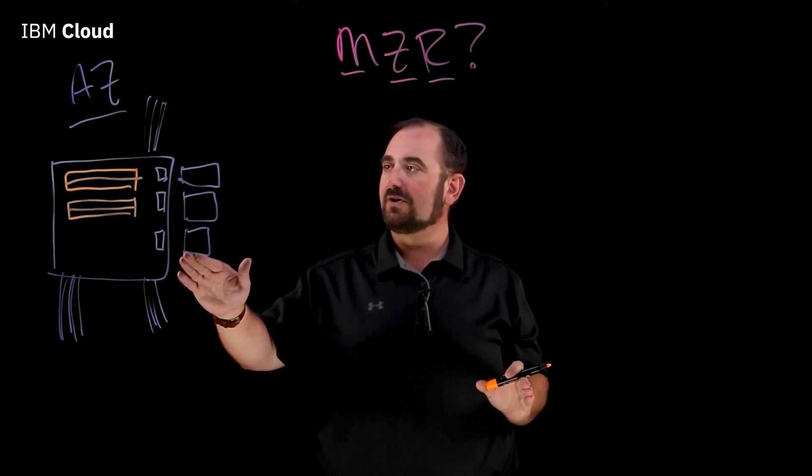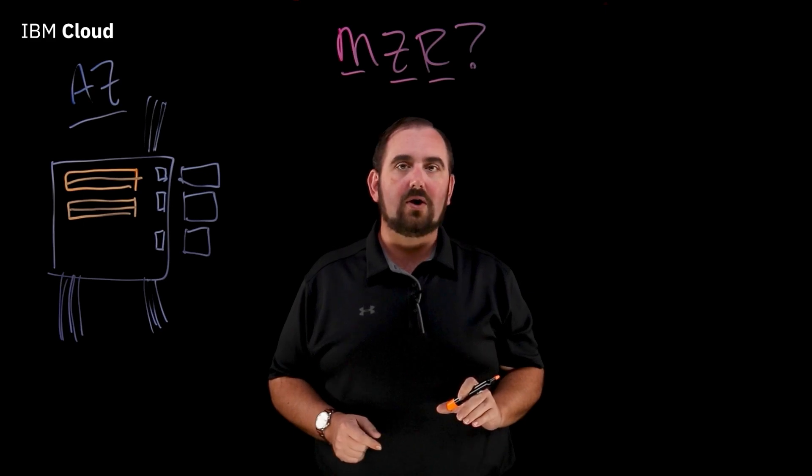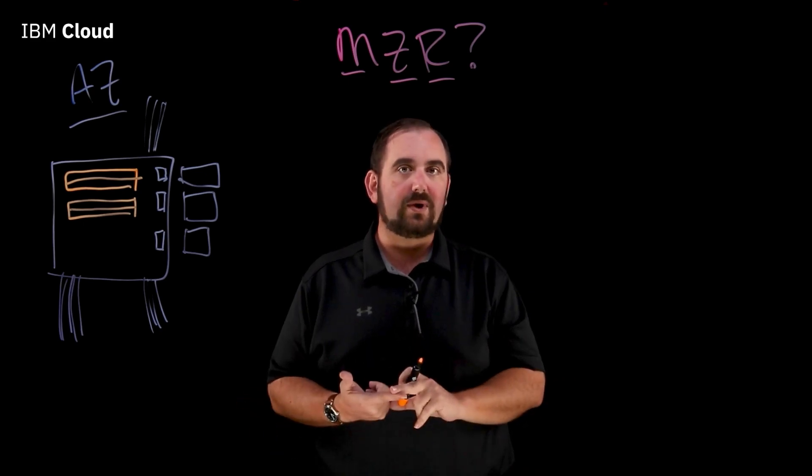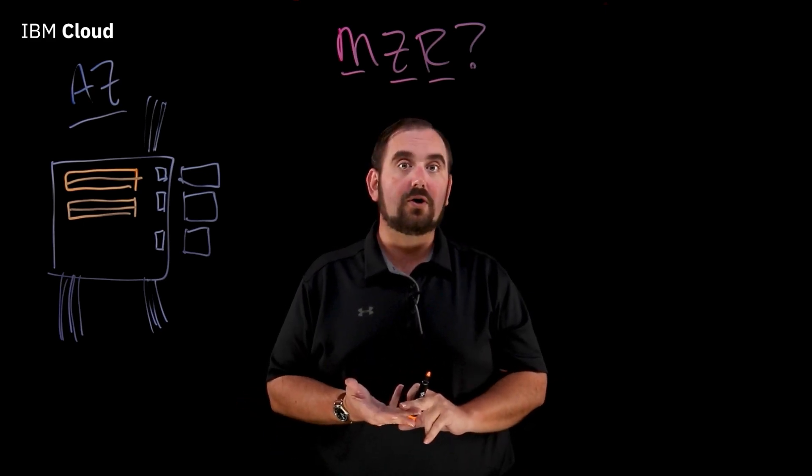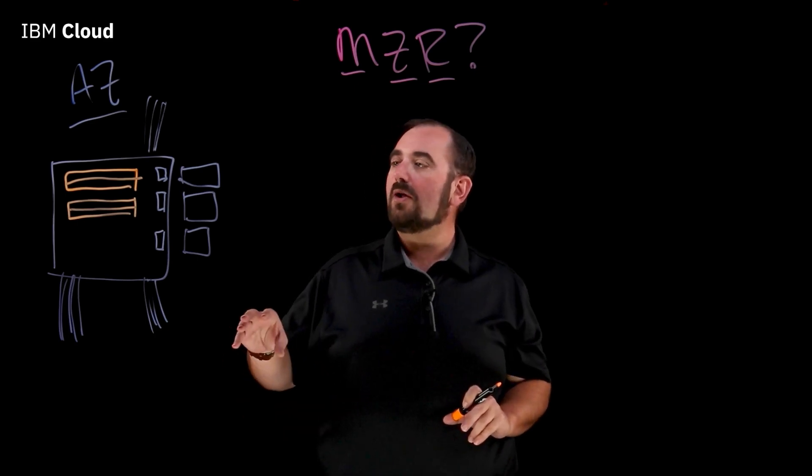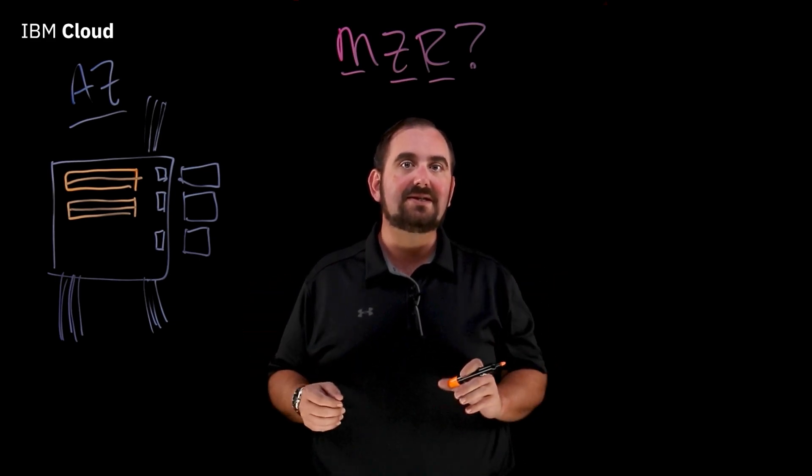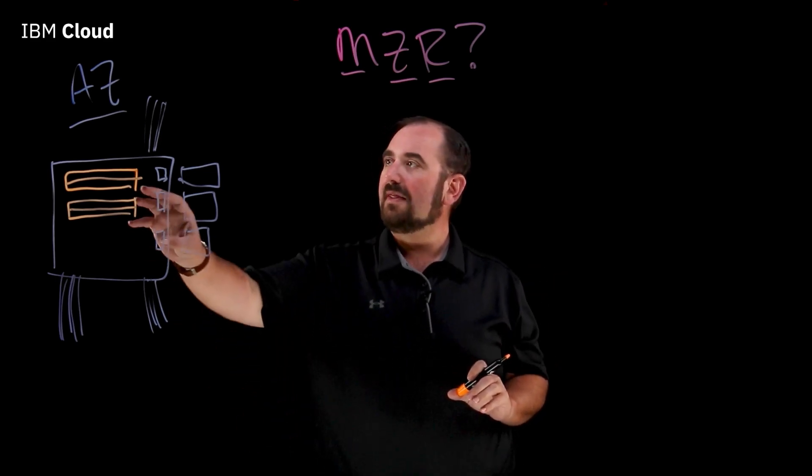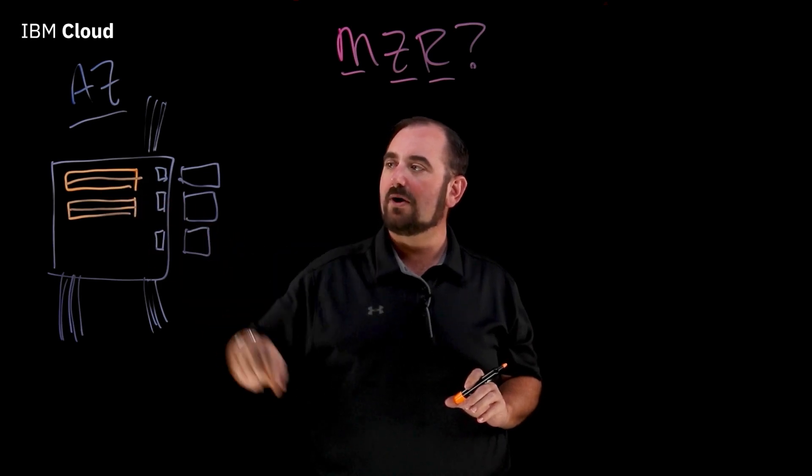In addition to the servers that are on those rows, we also have all of the network gear, the switches, the routers, the hardware firewall devices, hardware load balancers. So, all of the equipment, what you think of as the magic that is the underlying layer of the cloud, that is all in these rows.